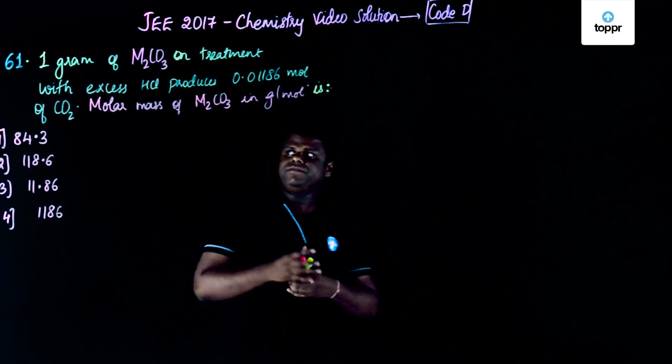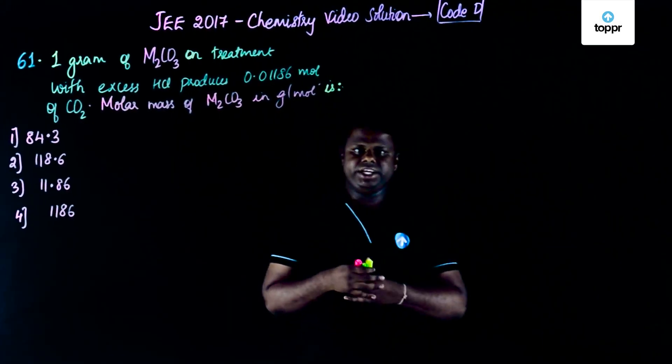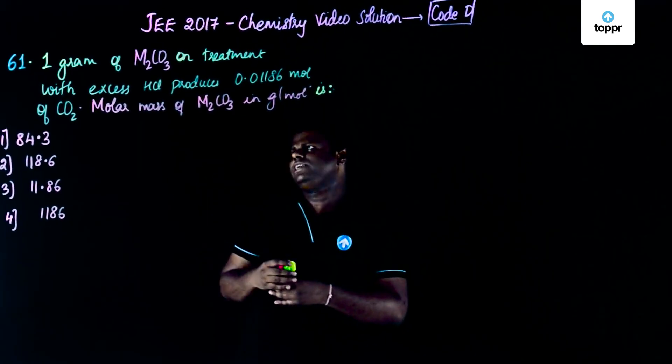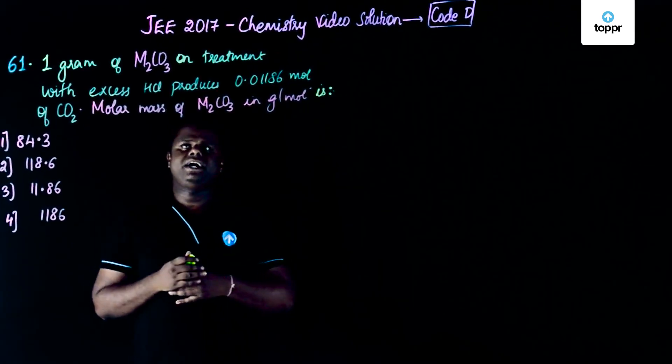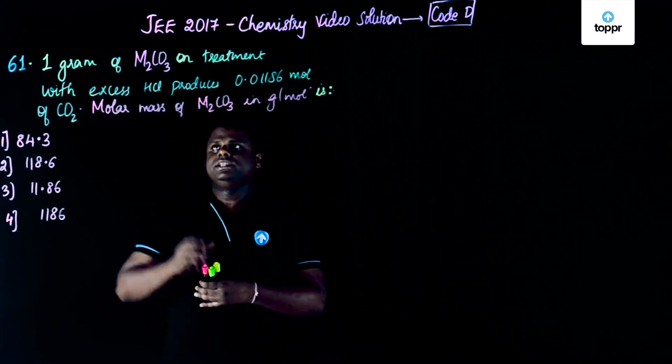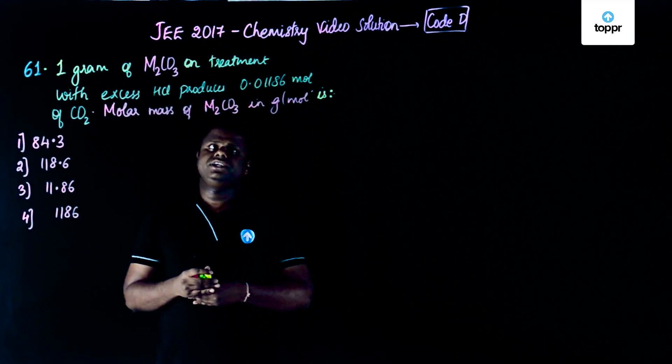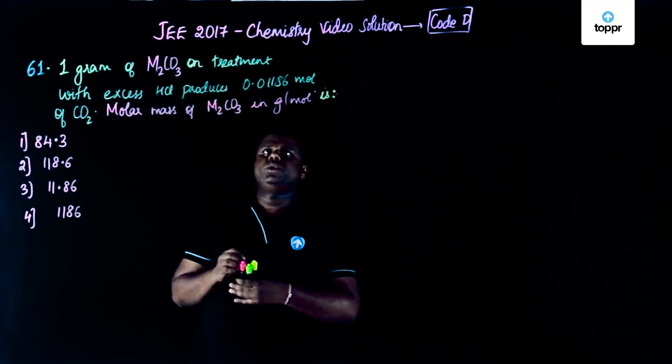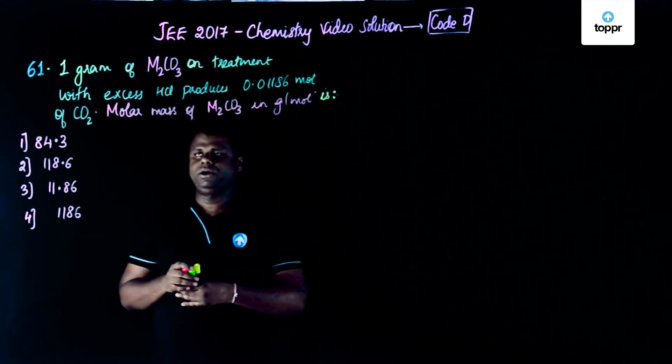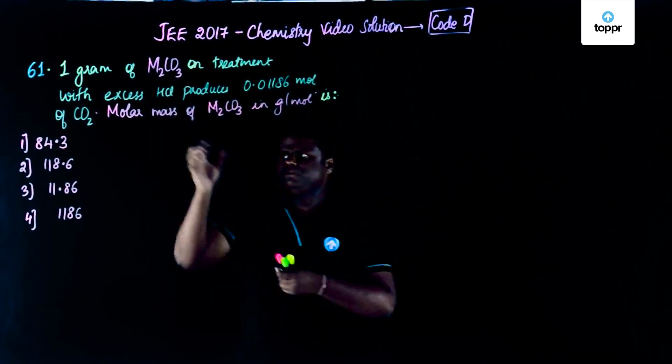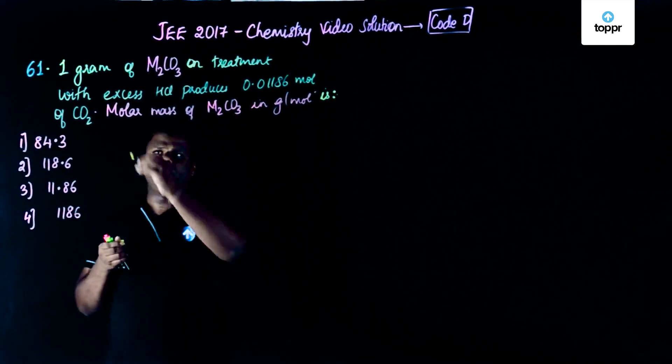Now let's move on to the next question which is question number 61 of JEE 2017 Code D chemistry video solutions. Let's start with the question: 1 gram of metallic carbonate, M2CO3, on treatment with excess HCl produces 0.01186 moles of carbon dioxide and we are expected to calculate the molar mass of M2CO3. As the name suggests, this has to do something with moles. There could be various methods for solving it but the best method is to go for moles.